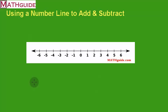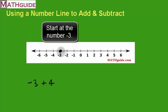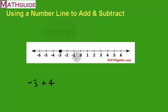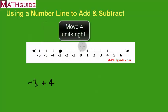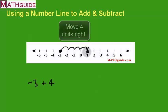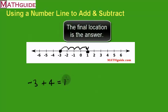Let's try another problem. Let's say we have negative three and we add four. I start at negative three. This says I'm going to add four — positive numbers mean we move to the right, just like negative numbers mean we move to the left. So I'm going to move four units to the right: one, two, three, four. My answer is one.